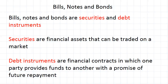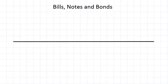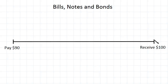Let's have a look at exactly how these function. Imagine a timeline: initially somebody purchases a bill, note, or bond — they pay money to the seller. You can think of that payment as a purchase, but equivalently you can think of it as them lending money to the seller. The seller issues these bills, notes, or bonds in order to raise money for some purpose. After a period of time specified in the contract — on what we call the maturity date — a payment is made back to the buyer. So the buyer, or the lender, pays money initially and then after some period of time they get the money back plus interest.